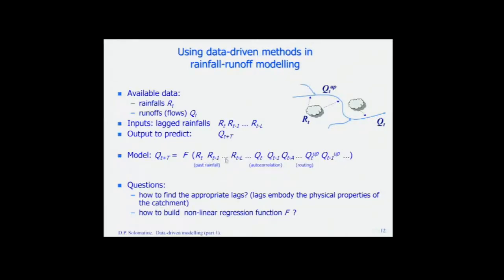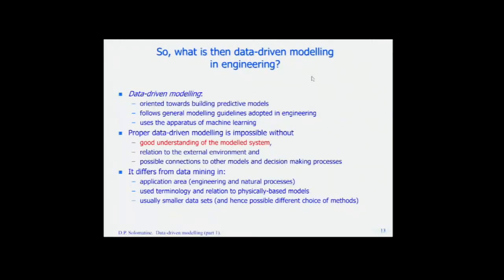We can take discharges from upstream and it becomes a routing model — discharges routed downstream. All this is possible if you have the data. The question is how to find the appropriate lags L and A, and how to build this nonlinear regression function f. To build this function, we use machine learning methods. To find appropriate lags, we need some physical judgment and hydrological information about the catchment.